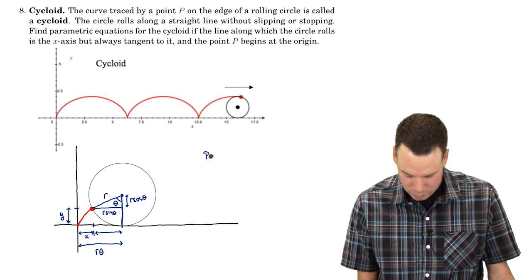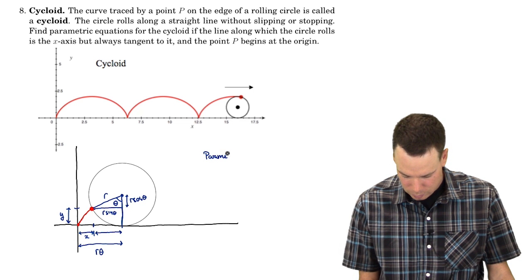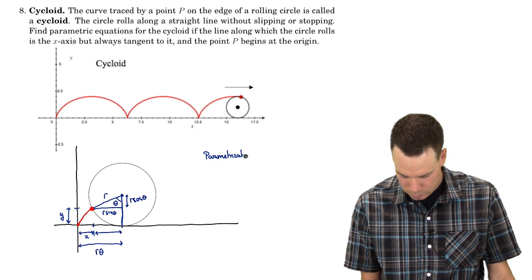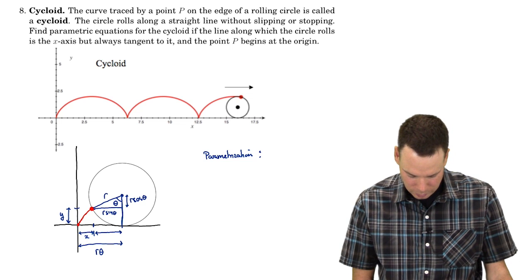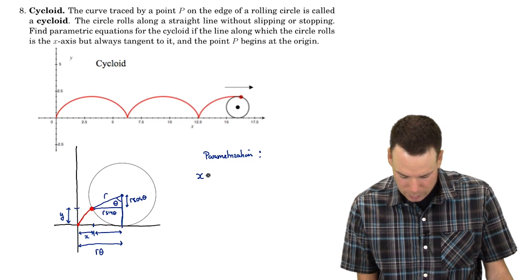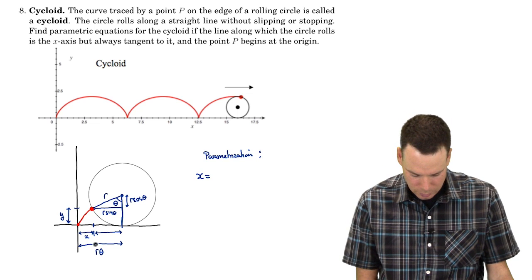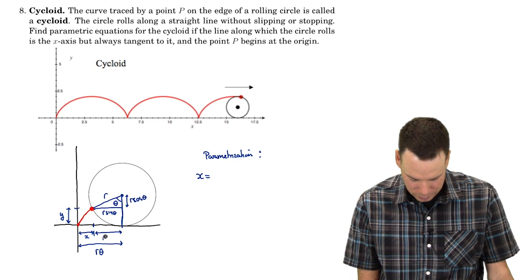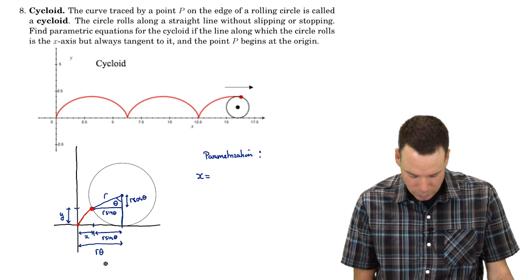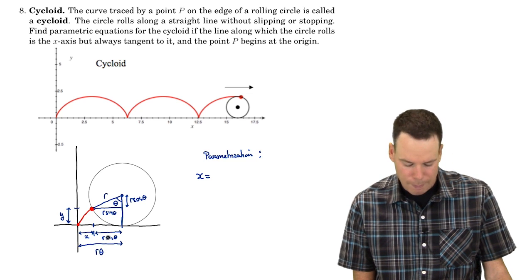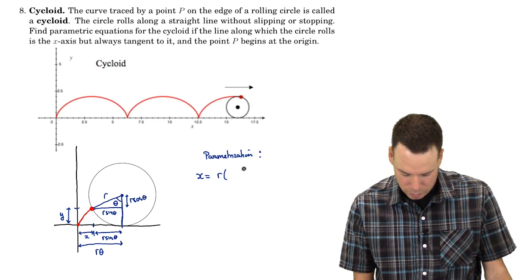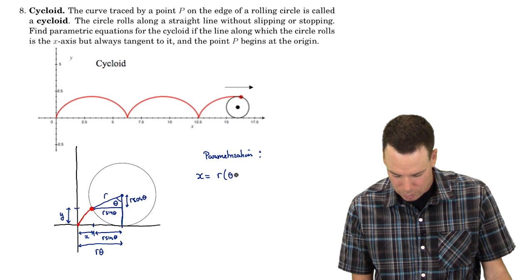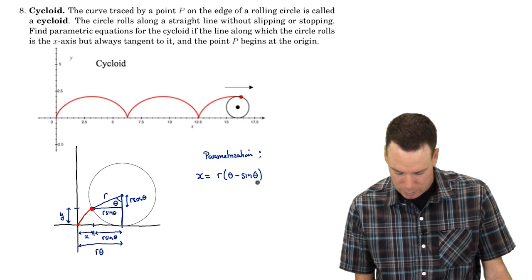So here's our parametrization. I'm going to get rid of this rest of the axes that we don't need. What is x? x is, I should have carried that down, that length we've worked out is r sine theta. So x is r theta minus r sine theta. Or in other words, it's r times theta minus sine theta.